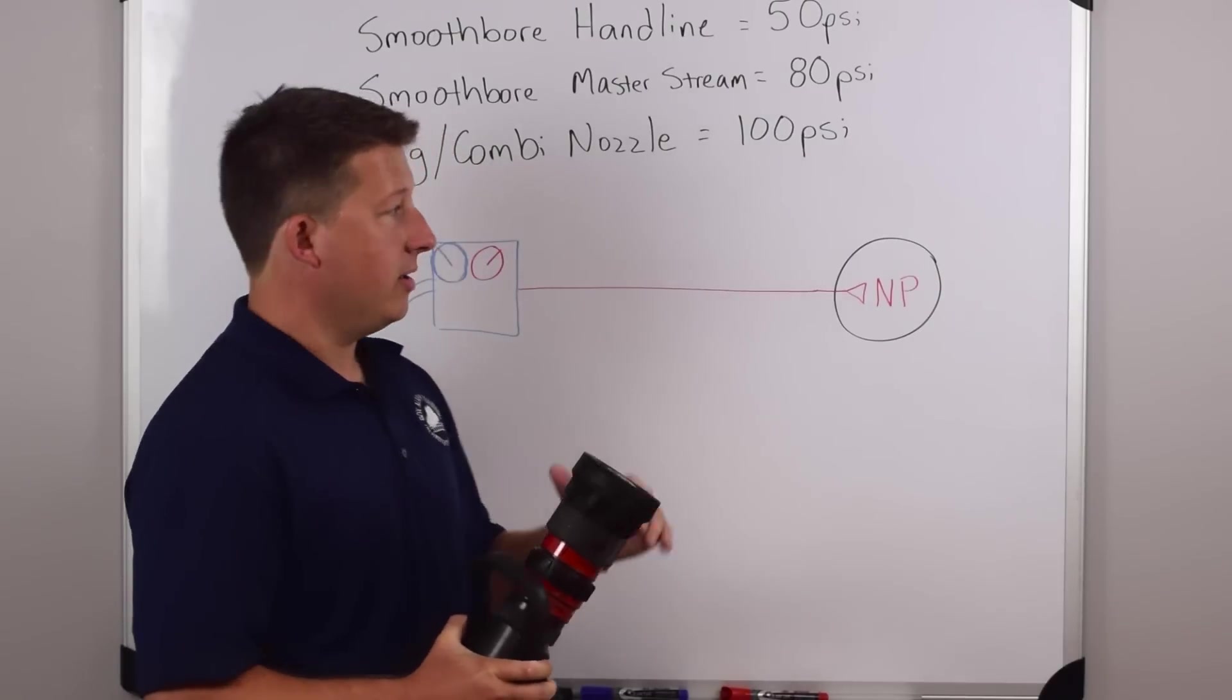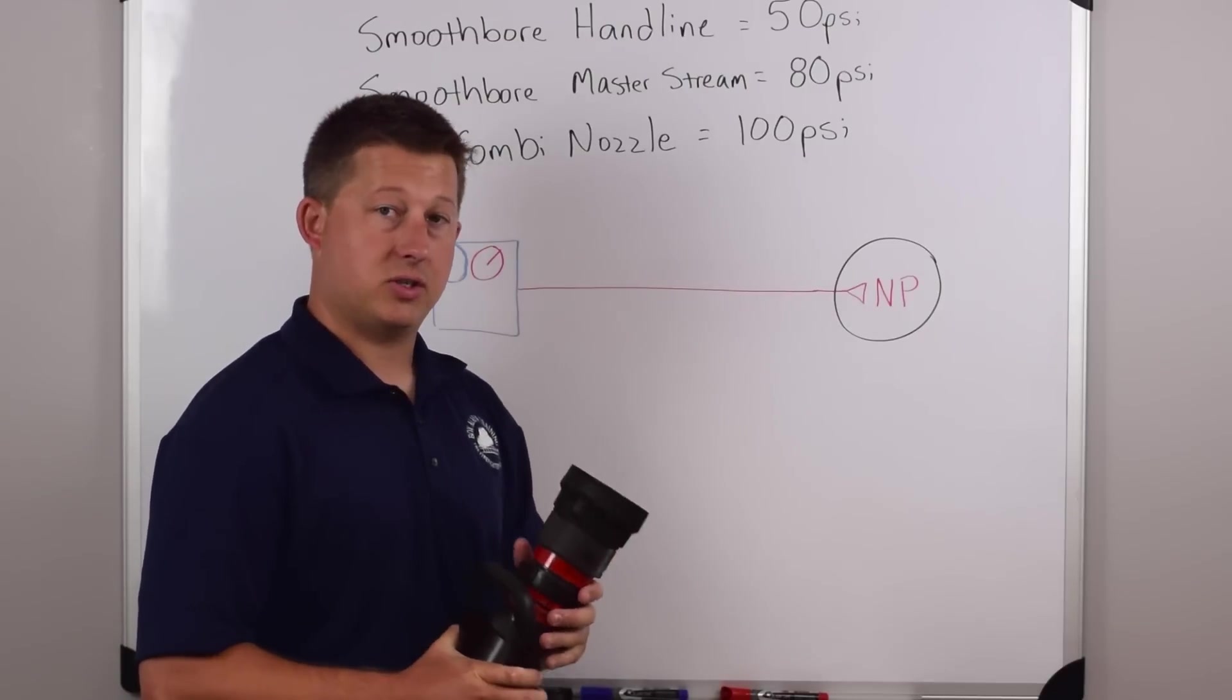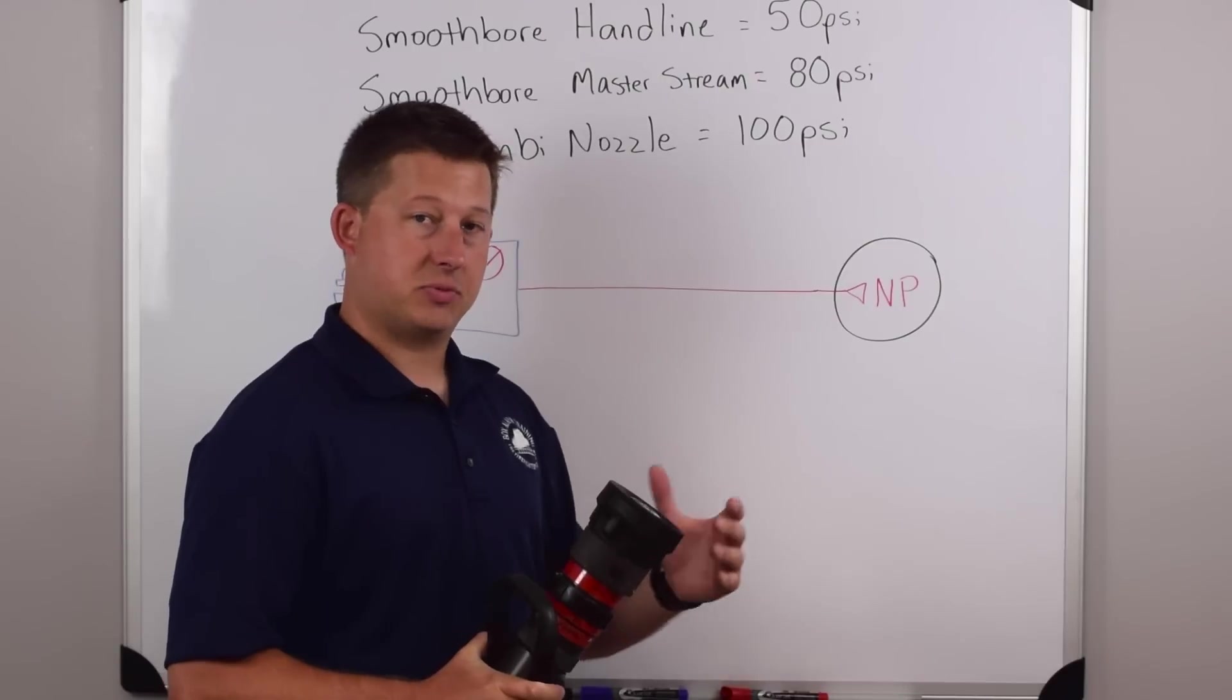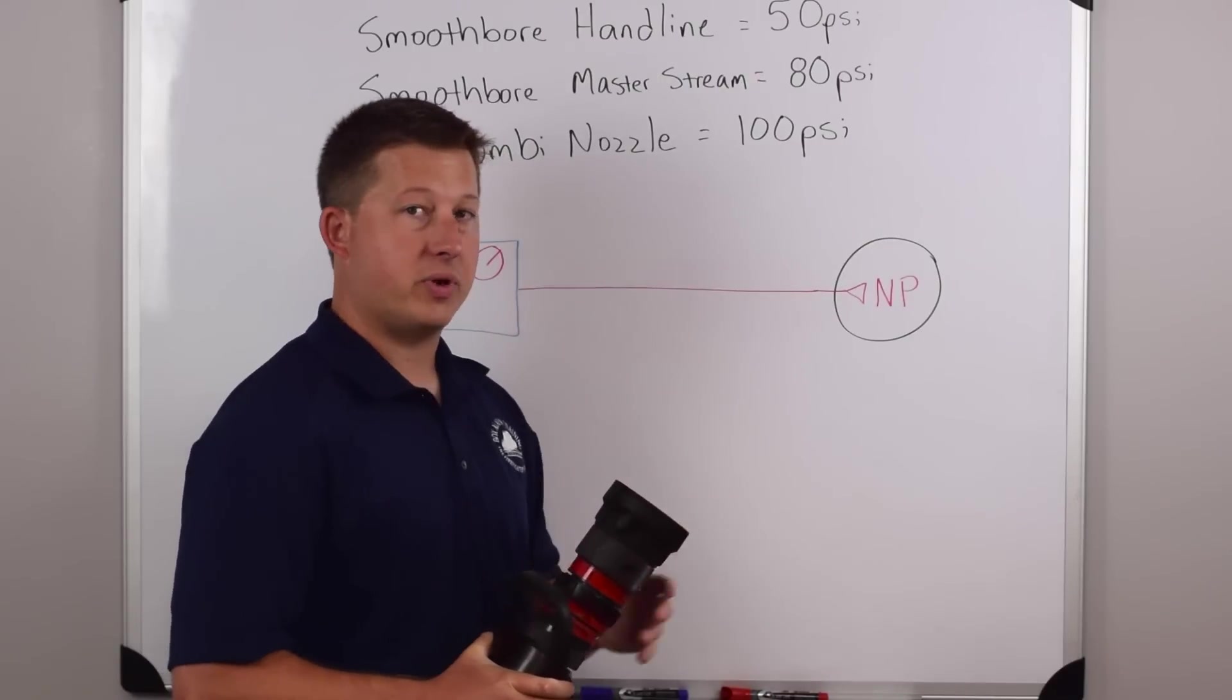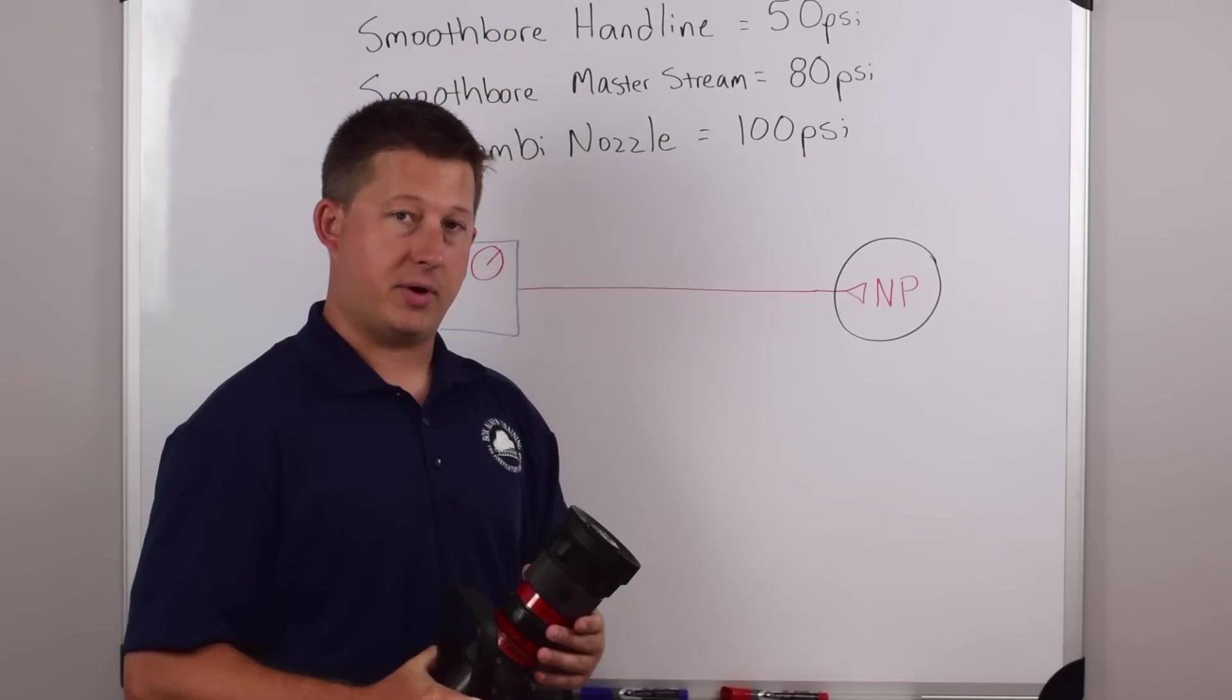For our purposes, the standard fog nozzle that we use for our calculations is a 100 PSI nozzle. However, outside of tests and textbooks, as a general 100 PSI rule, there's several other pressure operations of fog and combination nozzles.